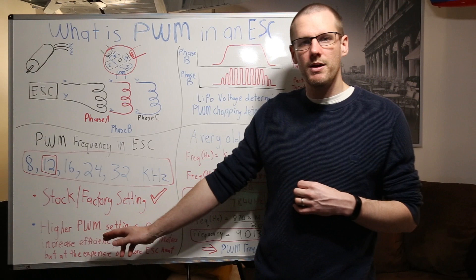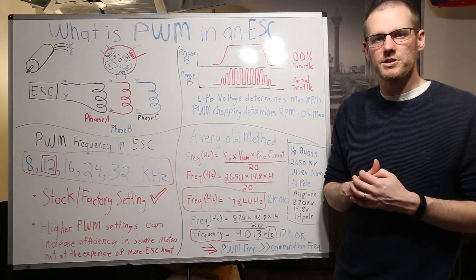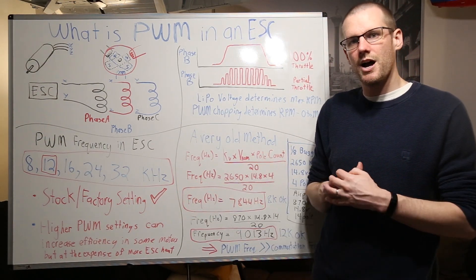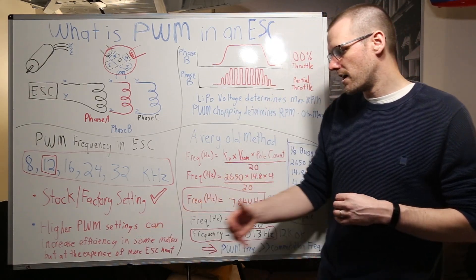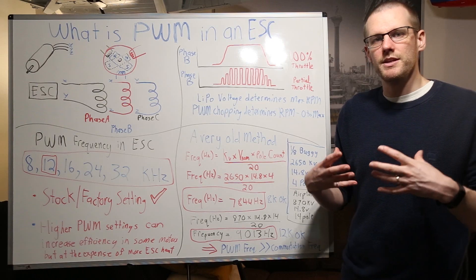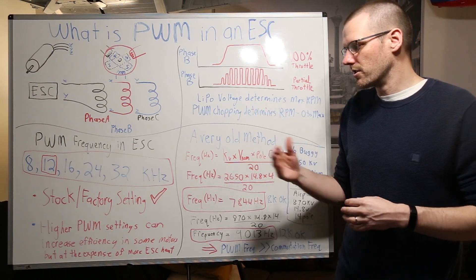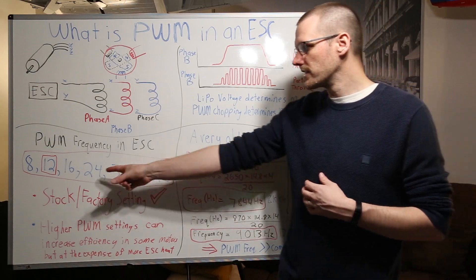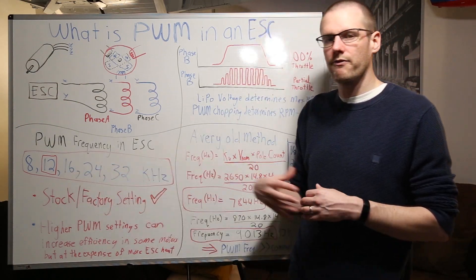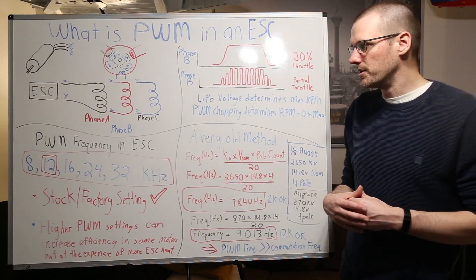Higher PWM settings can actually increase the efficiency of some motor types. However you do end up sacrificing some of the heat that now the ESC is going to produce. You're going to get more heat out of a speed control if you're asking it to produce a higher function of this PWM rate.